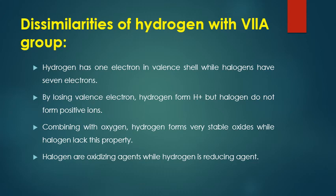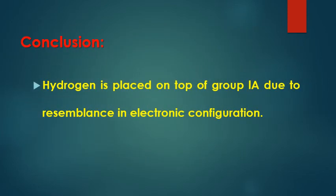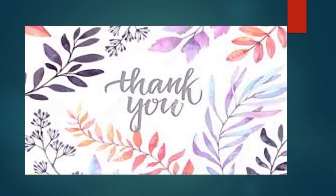So the conclusion is: hydrogen is placed at the top of Group 1A due to resemblance in electronic configuration — both have one electron in their valence shell — and based on other properties as well. This is the position of hydrogen. This was a very important and interesting lecture. I hope everything is clear. Thank you very much. Remember me in your prayers. Take very good care of yourself. Allah Hafiz.